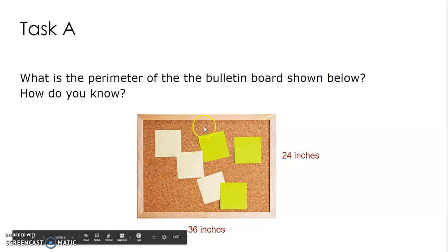So to figure out the perimeter, we know that we're going to add all four of these sides. And if I add 24 plus 24, I get 48, plus 36, plus another 36. So you should have gotten 120 inches is the perimeter for the bulletin board.